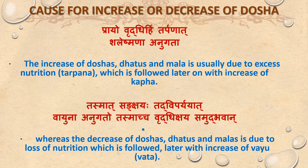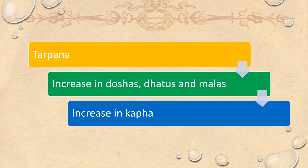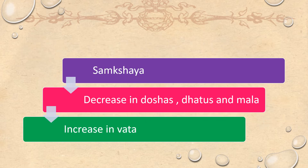Cause for increase or decrease of Doshas: Prayo Vriddhihi Tarpanat, Tleshmana Anugada. Increase of Doshas, Dhatus, and Malas is usually due to excess nutrition or Tarpana, which is followed later on with increase of Kapha. Whereas the decrease of Doshas, Dhatu, and Mala is due to loss of nutrition — Sankshaya — followed later on with increase of Vayu.